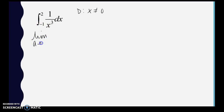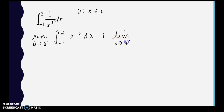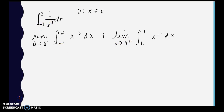We set up the limit as a approaches 0 from the left, integrating from -1 to a of the function, and add to that another limit statement: the limit as b approaches 0 from the right, integrating from b to 1 of x to the negative third dx. The infinite discontinuity occurred between the bounds, so we set up two limit statements — where one leaves off, the other picks up, meeting at the discontinuity x = 0.